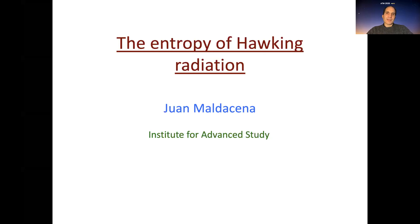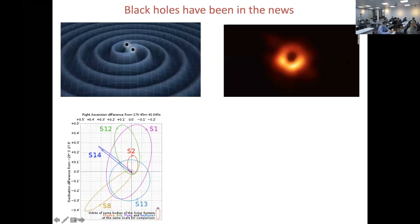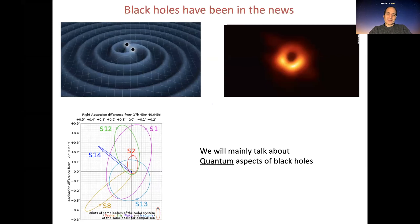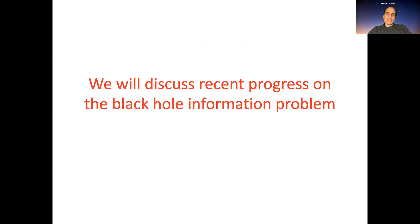These developments enable us to compute the entropy of Hawking radiation. Black holes have been recently in the news through various experimental discoveries like gravity waves, the Event Horizon Telescope, or the orbits of stars near the black hole in the center of the Milky Way. But I will not talk about any of these experimental results. What I'll mainly talk about are quantum aspects of black holes. We'll discuss some recent progress on the black hole information problem.